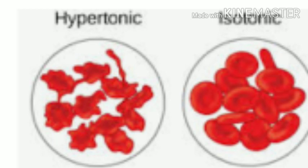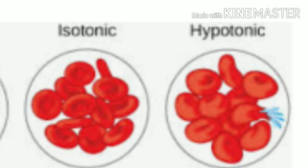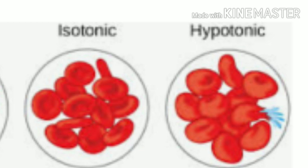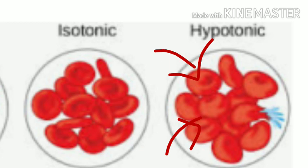Deplasmolysis occurs as a reverse of plasmolysis. If red blood cells are placed in a liquid or dilute medium or in simple water, deplasmolysis occurs and water enters from outside the RBC into inside, and the red blood cells swell and thus lysis occurs.